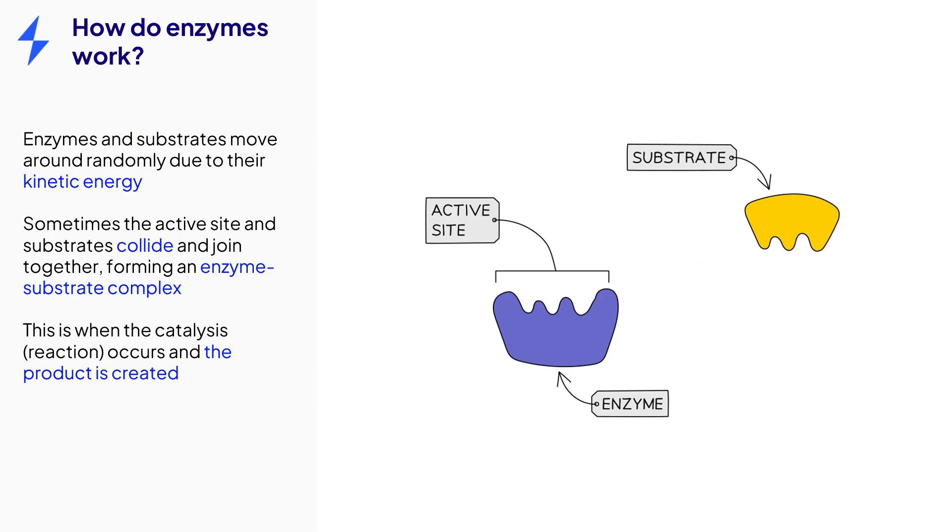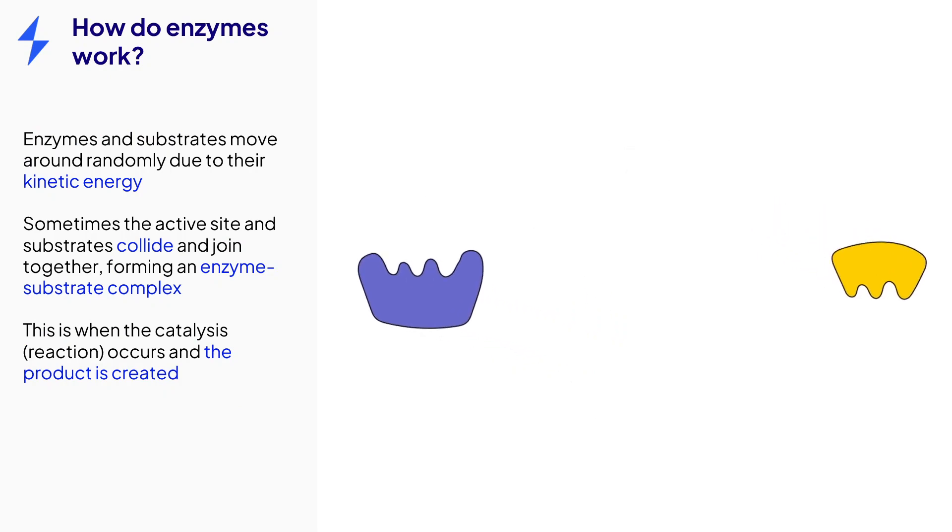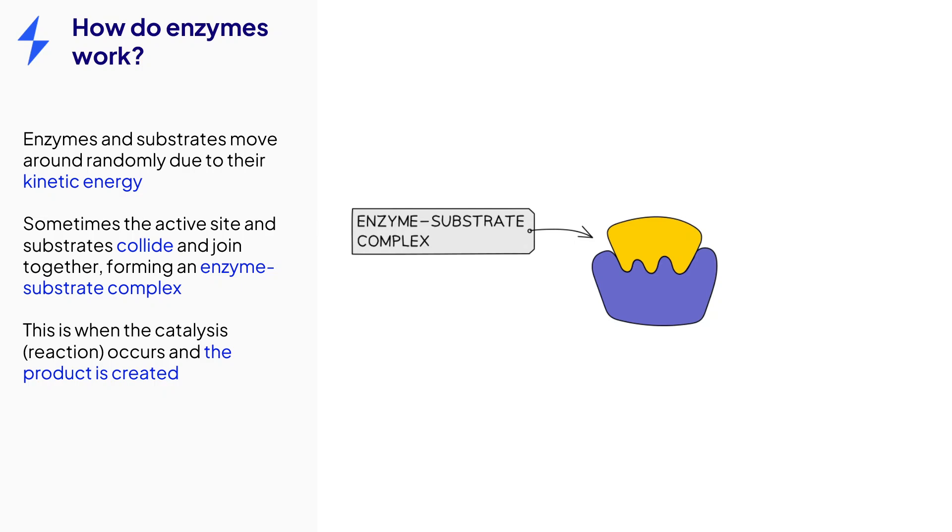Let's take a look at how enzymes work. The enzymes and substrates are always moving around in their solution due to their kinetic energy. Sometimes, due to their random movement, they collide and the substrate binds to the active site of the enzyme, forming an enzyme-substrate complex.